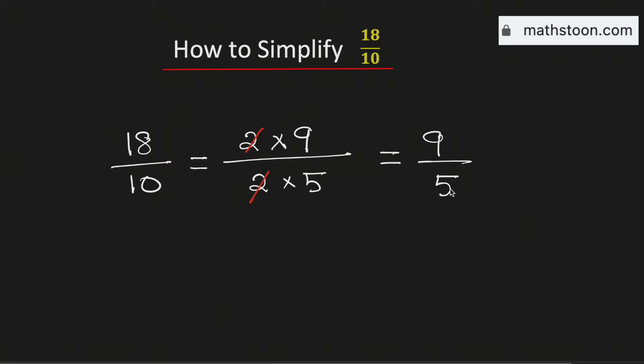Now look that it cannot be simplified further because there is no number other than one which can divide both 5 and 9, so it is already simplified. Now it is an improper fraction so we will write it as a mixed number.